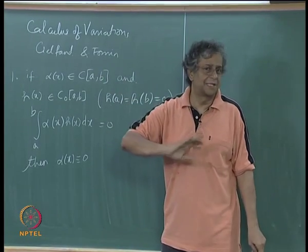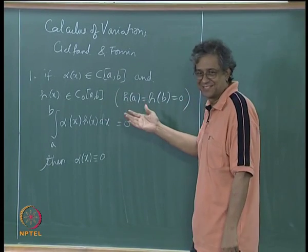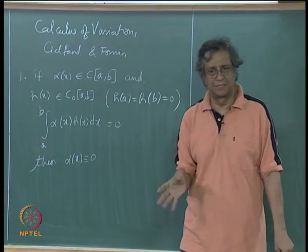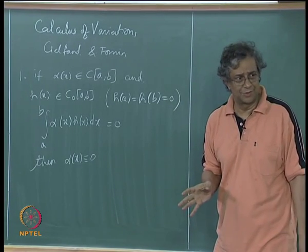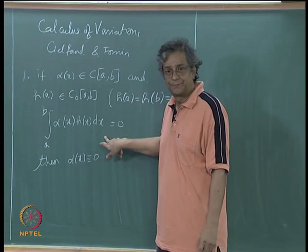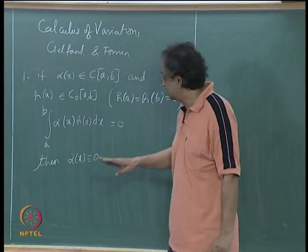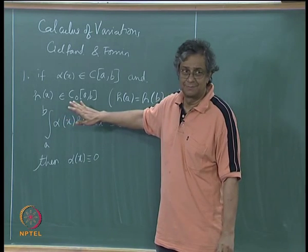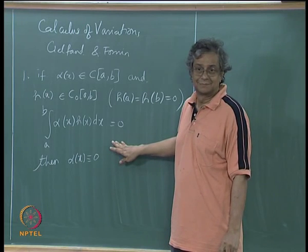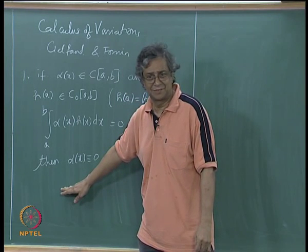The way mathematics works, it is basically a conversation between two individuals. I will give you an alpha of x, continuous on [A,B], such that the integral of alpha(x) h(x) dx is 0. You get to pick any h of x that you want — as long as it is continuous and h(A) equals h(B) equals 0 — and I guarantee this integral will be 0. To which you say: your alpha must be 0.